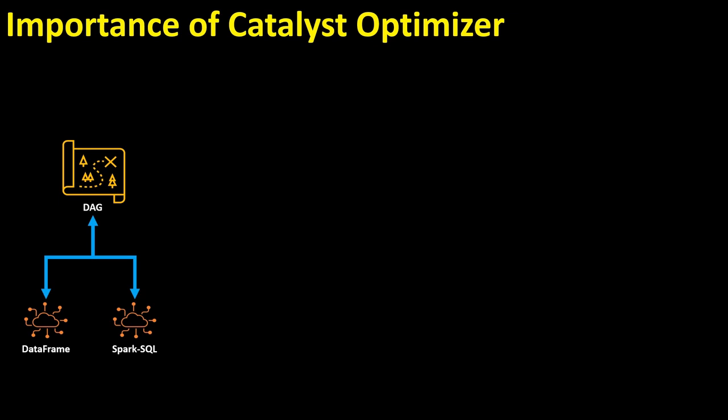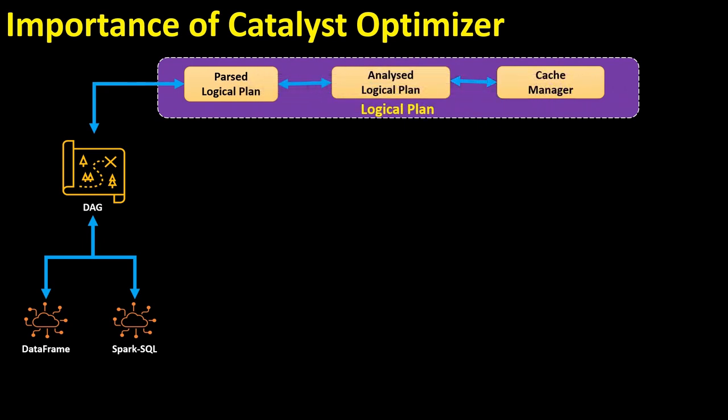What do you do with the logical plan? There are three phases: the Parsed Logical Plan, the Analyzed Logical Plan, and the Catalog Manager. In the Parsed Logical Plan, you can get the data, validate the information, and gather it in the Unresolved Logical Plan.